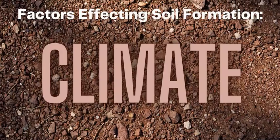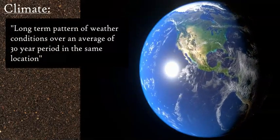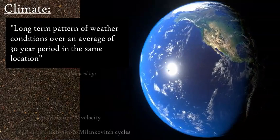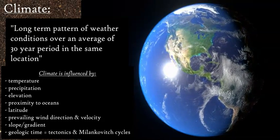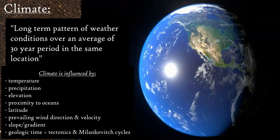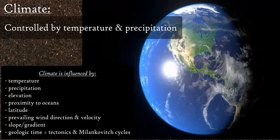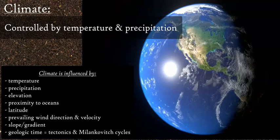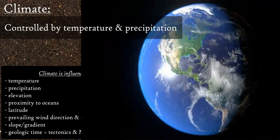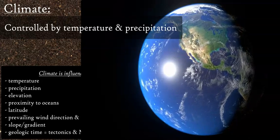Climate is defined as the consistent weather patterns over an average 30-year period — weather is daily, climate is long-term and chronic. Climate is established by temperature, latitude, elevation, proximity to oceans versus landlocked continentality, wind direction and speed, and pressure belts which determine whether you get rain, sleet, snow, or ice, and how much and how consistently.